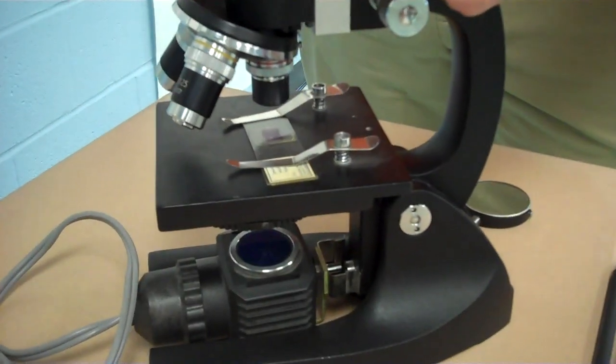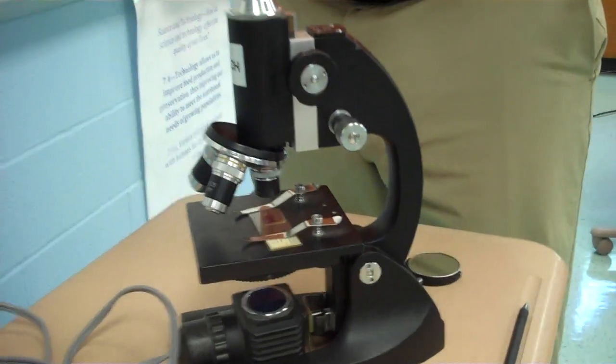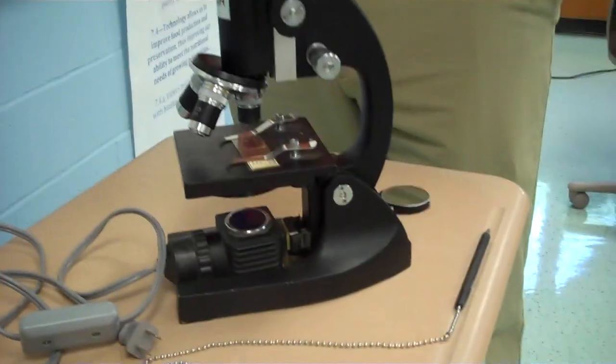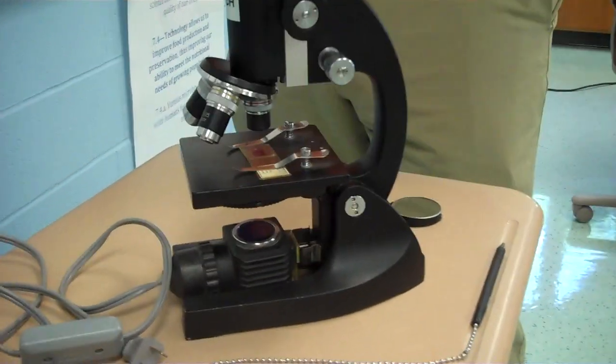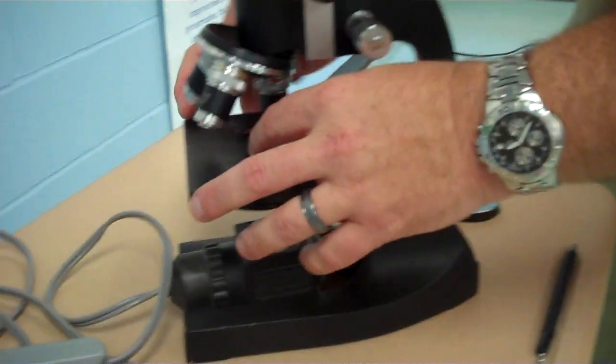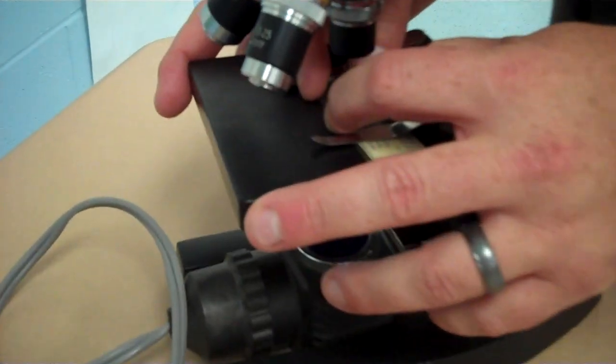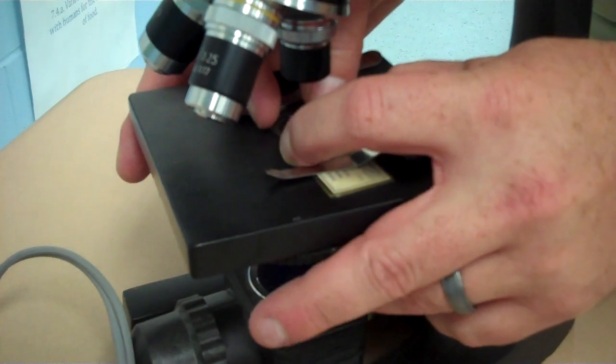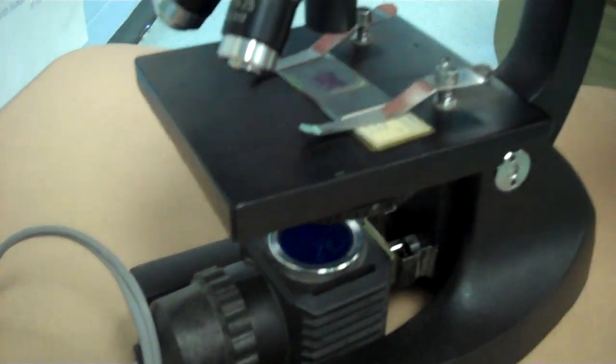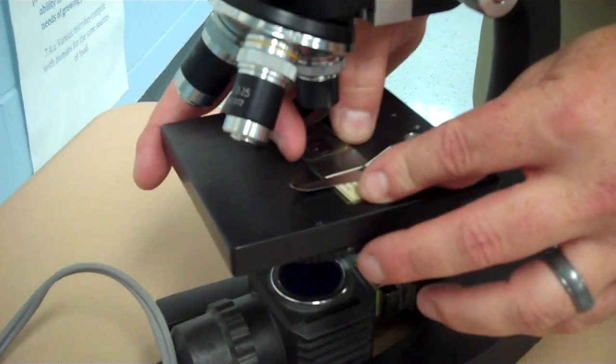And then you would focus using the coarse adjustment knob. If you need to move the image upward, you have to do the opposite. So in order to get the image to move up, you actually slide the slide downward. If you need it to move to the left, you actually would move it to the right to see it. And this is something that we're going to be doing next week. But it's important to understand how to use a microscope properly and identifying the parts of the microscope. Thank you.